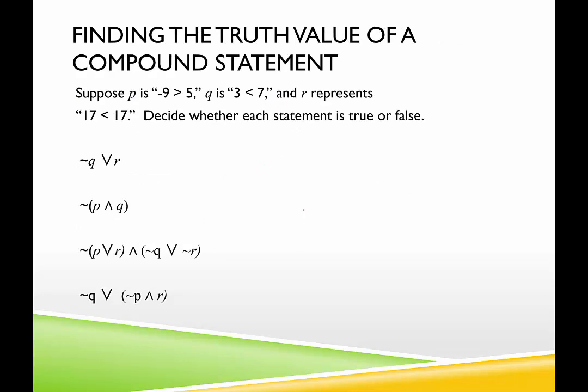Okay, so here are some examples. Try to come up with the truth value for each one. So we have here what P is representing and what Q is representing and what R is representing. Decide whether each statement is true or false. So I suggest pause the video, see what you come up with for these four examples, and then check back with me. I'm going to go over each one separately.